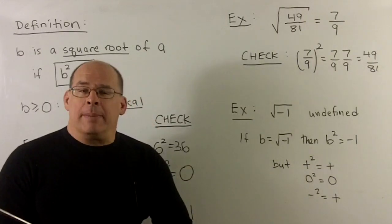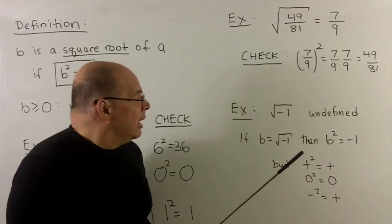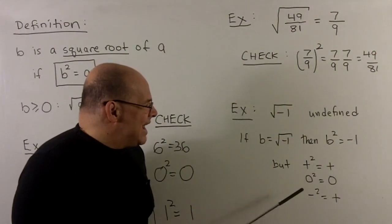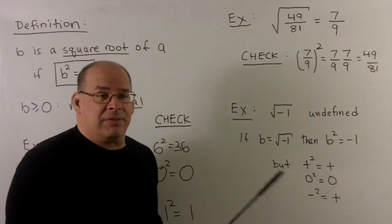And then if we think about how things square, positive numbers square to positive numbers, zero squares to zero, and negative numbers square to positive numbers.